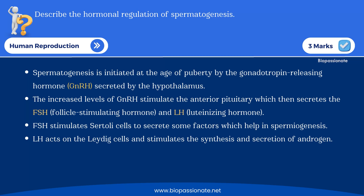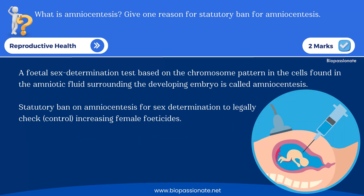From the next chapter — Reproductive Health — they will ask about four important topics: the first is problems and strategies, second is contraceptive devices, third is medical termination of pregnancy (MTP), and fourth is ART — assisted reproductive technologies.